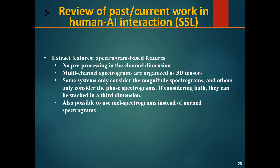Spectrum-based features involve no pre-processing in the channel dimension. Multi-channel spectrograms are organized as 3D tensors — some systems consider only magnitude spectrograms, others only phase spectrograms, and both can be stacked in a third dimension. It is also possible to use mel spectrograms instead of normal spectrograms. Many models use spectral or spectro-temporal features instead of raw waveforms as inputs, making the network input of size M×K, where M is the number of microphones and K is the number of considered STFT frequency bins.